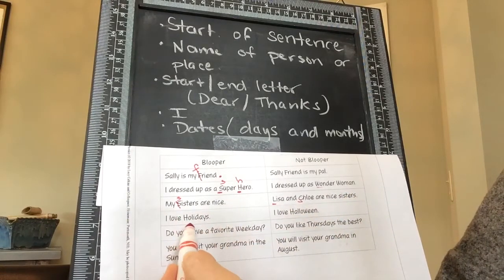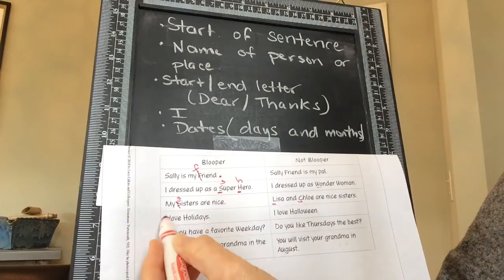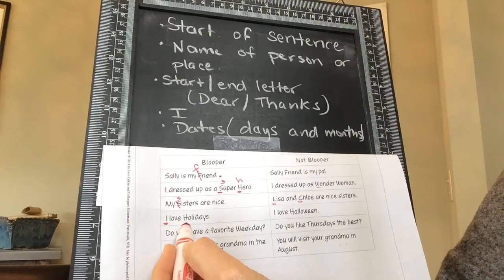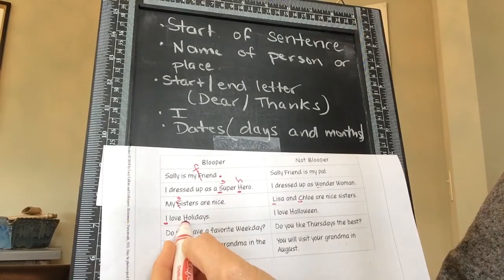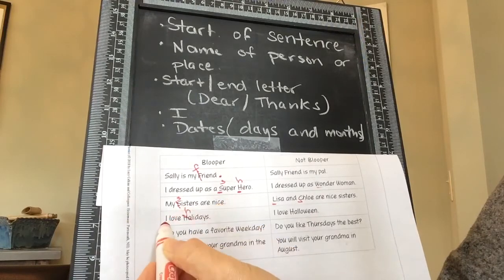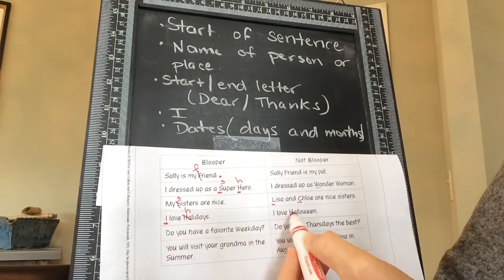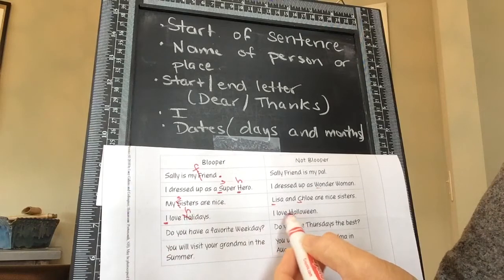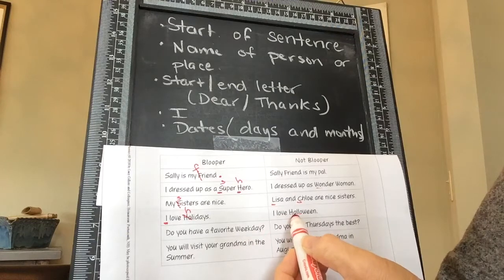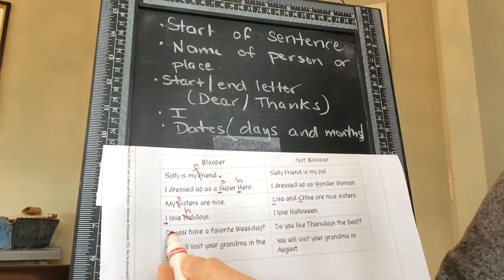This says, 'I love Holidays.' The I should be uppercase because it's the beginning of the sentence and it's the word I. The H in holidays is uppercase — should that be? No, because it's not talking about a particular holiday, it's just saying 'I love holidays.' On the other hand, 'I love Halloween' is correct. Halloween is a specific holiday, so that one needs to be uppercase.